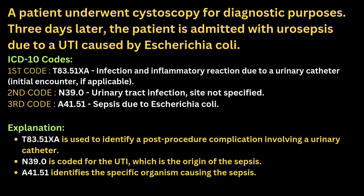The next example: a patient underwent cystoscopy for diagnostic purposes. Three days later the patient is admitted with urosepsis due to a UTI caused by E. coli. The primary code is infection following that procedure, T83.51XA. The second code is for UTI, and the third code is for sepsis due to that organism.